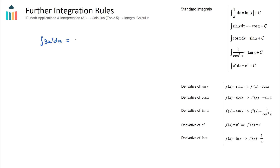We add 1 to the power and divide by the new power. The coefficient 3 stays, so it becomes 3x³ divided by 3, plus c. The plus c is our integrating constant — a very important step we always need to remember for an indefinite integral. Simplifying, the 3 cancels and we are left with x³ + c. We can check this by taking the derivative of x³, which gives 3x².